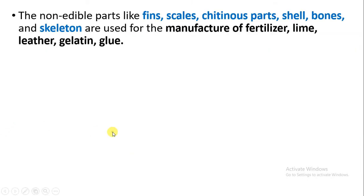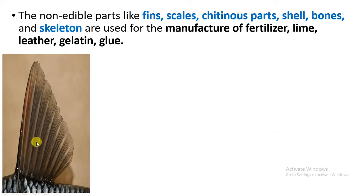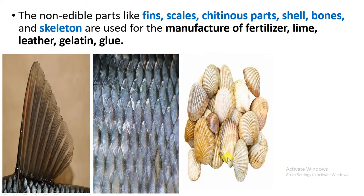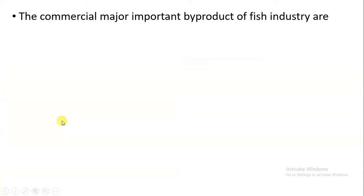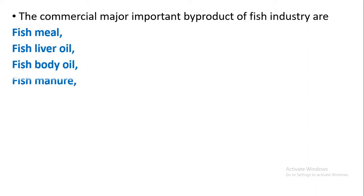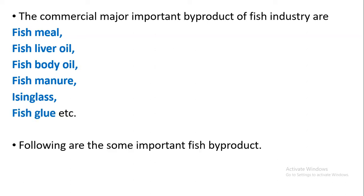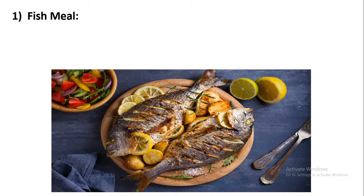Parts of fishes like fins, scales, chitinous parts, shell, and bone are non-edible parts. These are used to manufacture fertilizer, lime, leather, gelatin, and glue. There is significant commercial importance of fishery byproducts like fish meal, fish liver oil, fish body oil, fish manure, isinglass, fish glue, etc. We are going to study some of these byproducts in detail in this video.